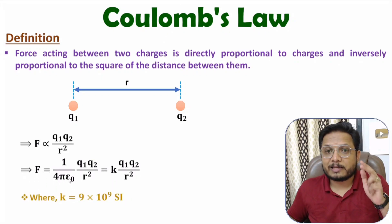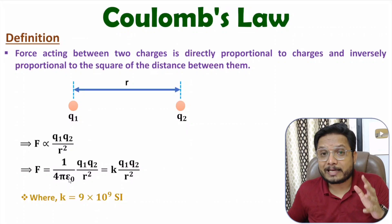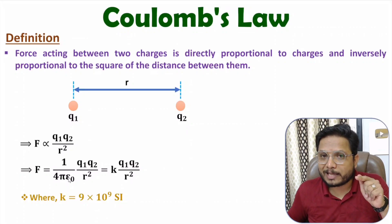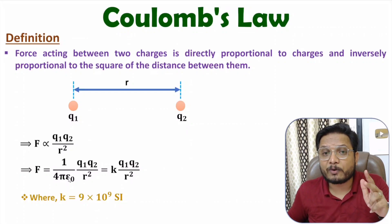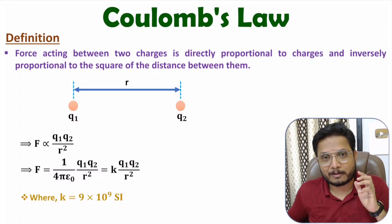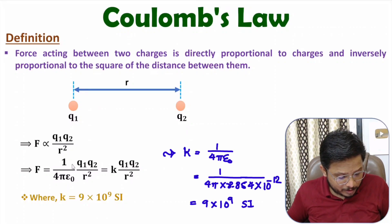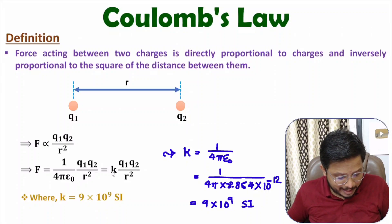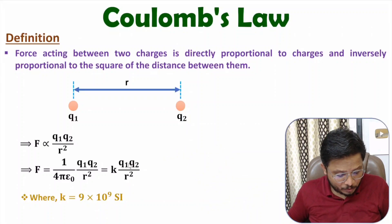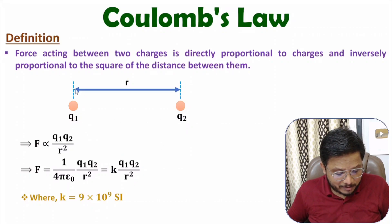Here ε₀ is the absolute permittivity, with a value of 8.854 × 10⁻¹² . If you substitute the values, the total constant k equals 9 × 10⁹. So force F = k·q1·q2 / r², where k is 9 × 10⁹, q1 and q2 are the charges, and r is the distance between them.